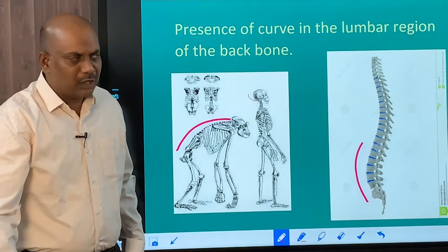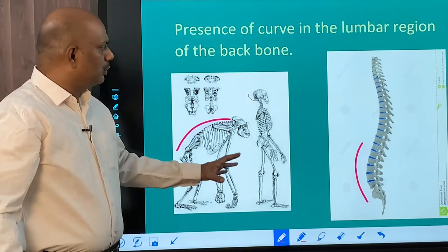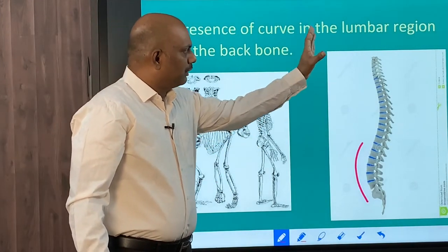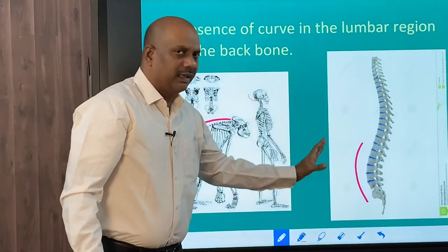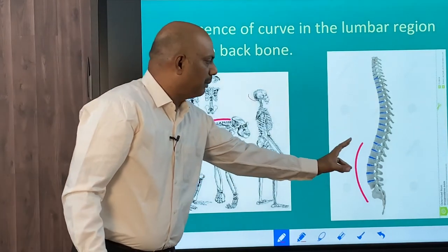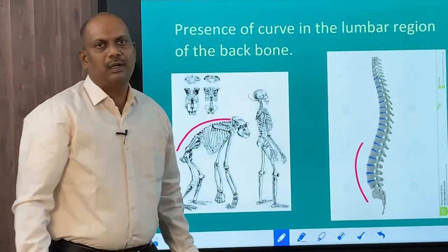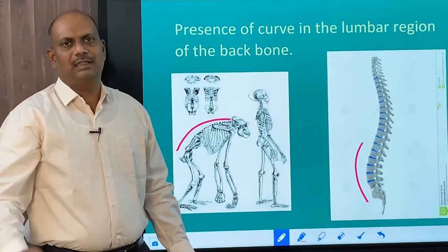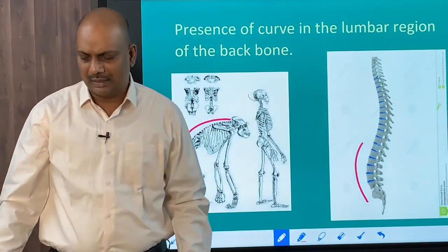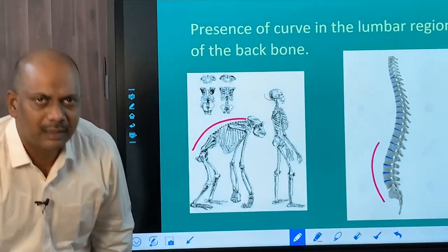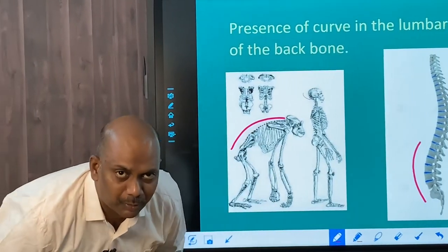For Australopithecus, though these curves are not perfect, there is still a curve in the lumbar region, which suggests that Australopithecus might have developed an erect posture.